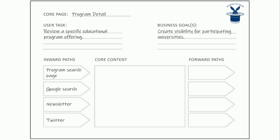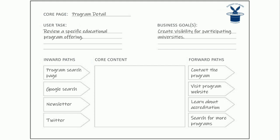The next step is to document the inward paths — how are we getting people to this page? You might have existing metrics or a marketing strategy to support this. For this particular page, the homepage isn't the entry point. People are arriving via a program search, a Google search, university newsletters, or Twitter feeds. Those are the inward paths, and we're already starting to build architecture. Then we define the forward paths — where do we want to take them next? We get a little selfish here: let them contact the program, learn more, check accreditation, or search for more programs if this one didn't meet their needs.